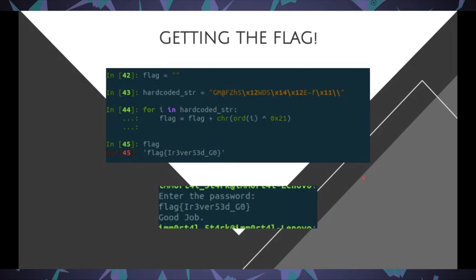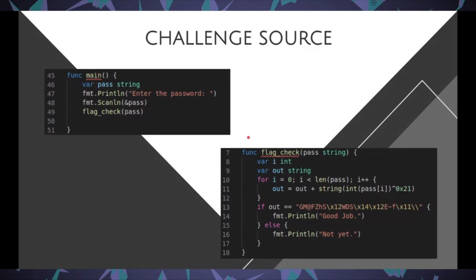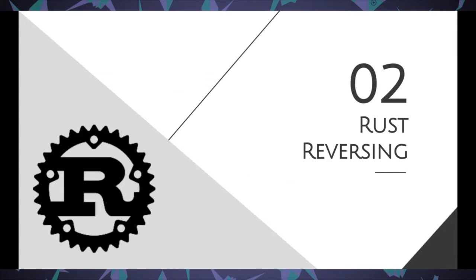I hope you had a little glimpse of Go reversing. The challenge source had a main that asked for a password, passed it to flag_check, and in flag_check it XORed each character in a loop and then checked the result. That's about it from me — now Namita will take on the Rust reversing part.